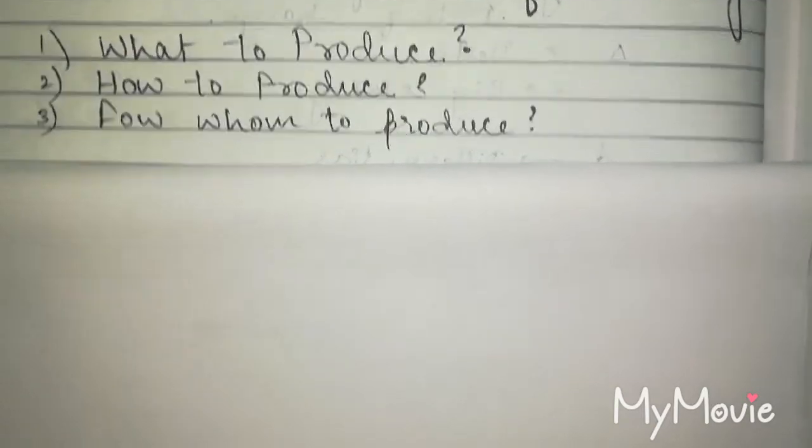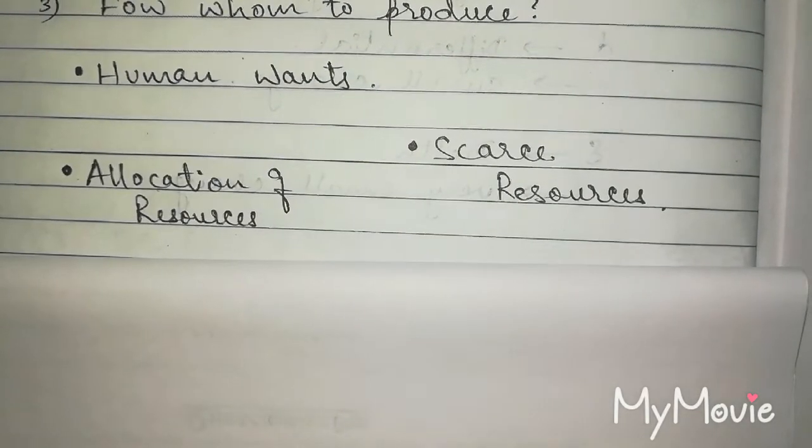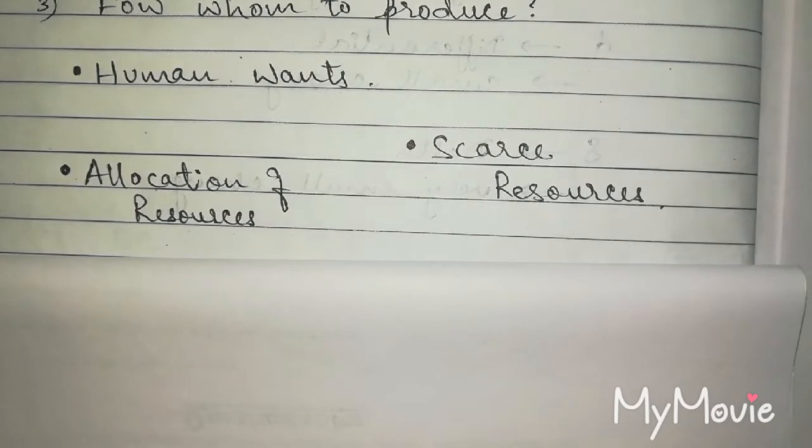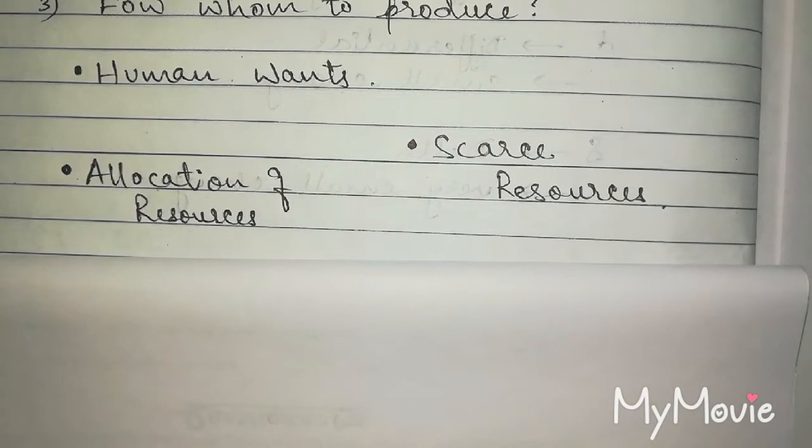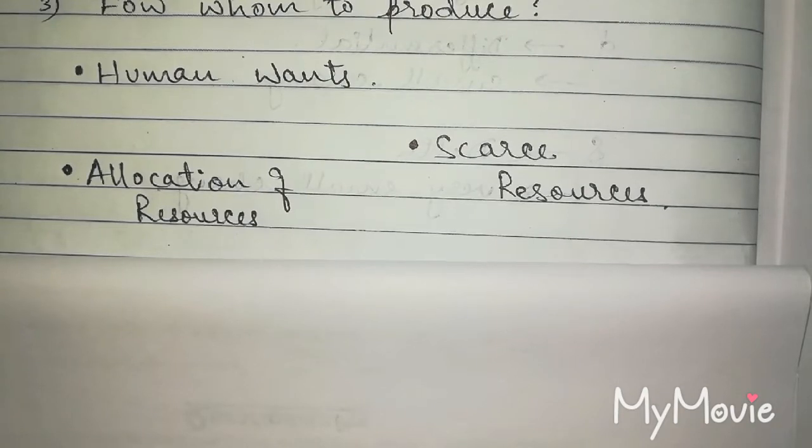Let's go in detail. These three factors we have already discussed in the previous video, that is video number one, where we discussed the definition of Robins, which is widely accepted. They said that human wants are unlimited and resources are scarce, and there is a problem of allocation of resources.